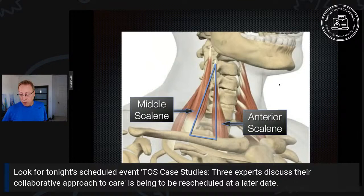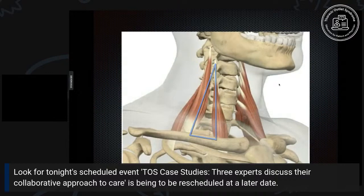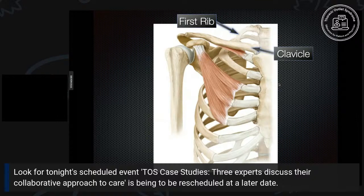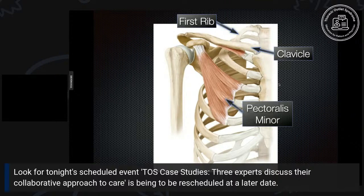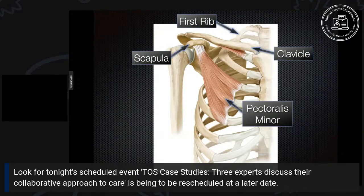You'll notice the scalene triangle won't change much with neck position or arm motion — it's pretty tight and fixed. But once the nerves and blood vessels pass through this space, they enter the next tunnel, which is a bony tunnel called the costoclavicular interval. What's important is that you can see the first rib and the collarbone, and between those two bones is a bony space — the second tunnel the nerves and blood vessels have to pass through. Anything that obstructs, compresses, or puts tension on them along the way can cause symptoms — that's thoracic outlet syndrome.